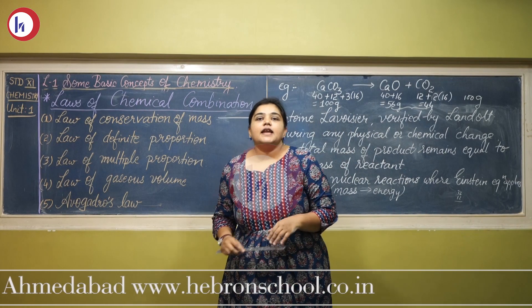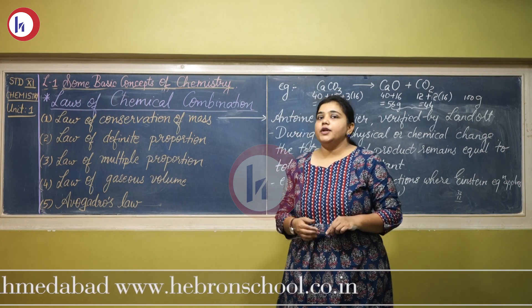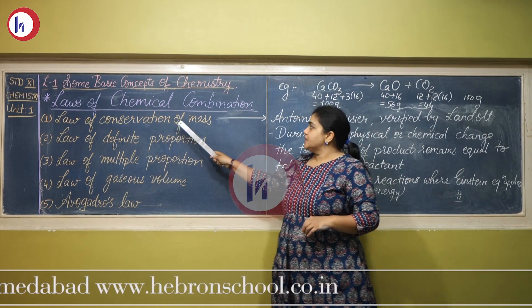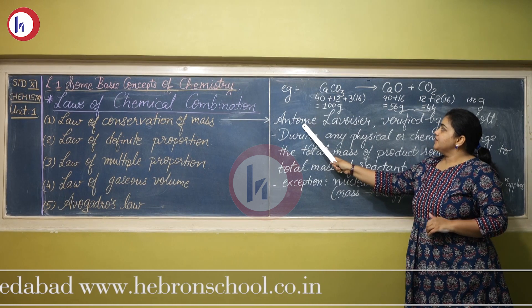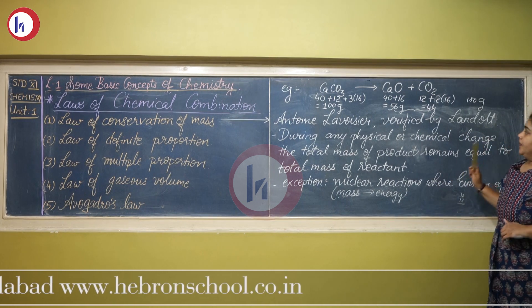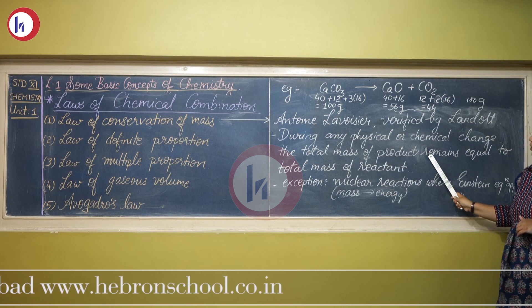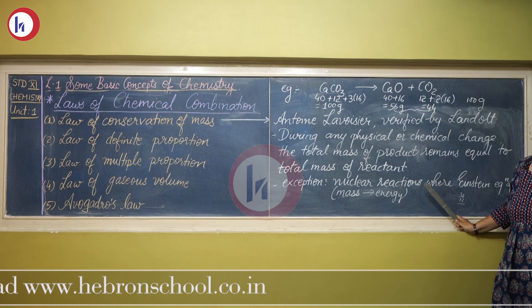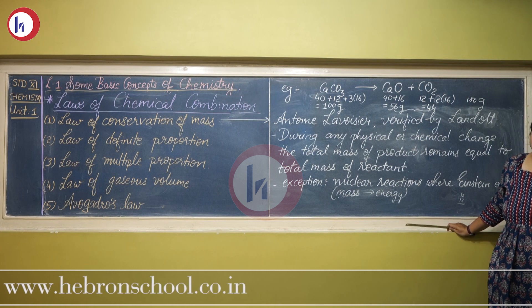In chemistry, there are certain laws that govern how a chemical reaction occurs, called the laws of chemical combination. The first law is the Law of Conservation of Mass, given by Antoine Lavoisier and verified by Landolt. This law states that during any physical or chemical change, the total mass of the products remains equal to the total mass of the reactants. In short, matter can neither be created nor destroyed, but it can be changed from one form to another.